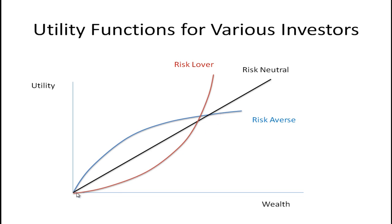The risk-neutral person, on the other hand, gets a proportional increase. They receive the same extra utility or the same extra satisfaction from an extra dollar whether they only had $2 in wealth or $100,000 in wealth. So these are people who only care about expected value.